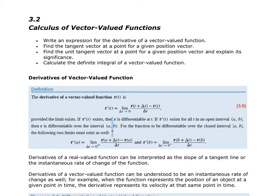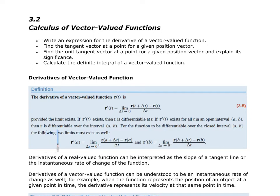We're going to first start with a formal definition: the derivative of a vector-valued function is defined as r prime of t, the limit as delta t goes to zero of r of t plus delta t minus r of t over delta t. This is similar to what we would expect with regular functions, provided the limit exists. If r prime exists, then r is differentiable at t. If r prime exists for an open interval, then r is differentiable over the entire open interval.